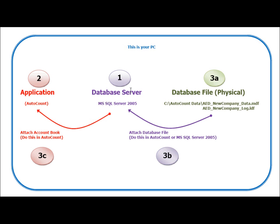When you run the software installation, the system will install the database server — the Microsoft SQL Server — into your system. Then the system will install the AutoCount accounting program. After that, the system will install the first database file into your C drive AutoCount data folder, followed by the name of the database that you key in. After the system creates an account book, the system will attach the database file from your physical location to the database server.